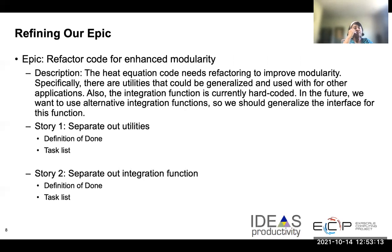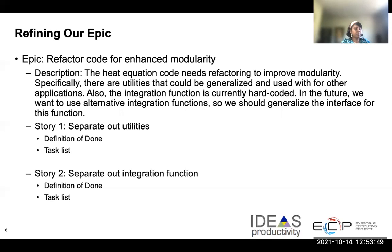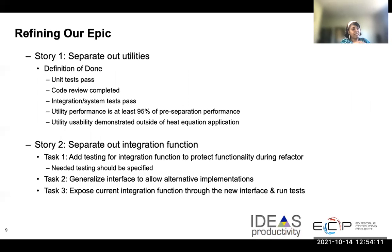Now let's refine our epic. Let's revisit the epic we discussed in the morning. The epic was for refactoring code for enhanced modularity, discussing a heat equation code. It covers two things: one is separating out utility functions, and the second is separating out the integration function. We outlined two stories for this epic for each of our objectives. After writing these two stories, we start working on the definition of done, and then we come up with a list of tasks from the stories. You can see one example of what done looks like for the first story.